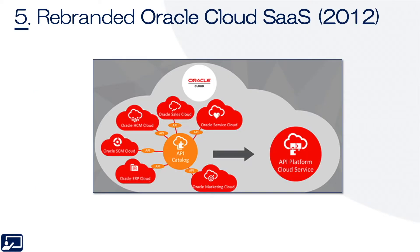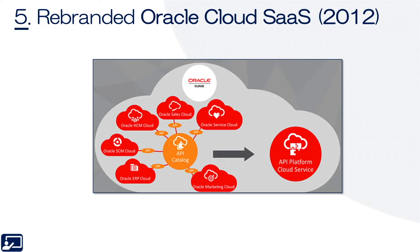Topic number five: rebranded as Oracle Cloud SaaS. As of September 2012, Oracle began to officially change the name of what it then called Fusion to Oracle Cloud Software as a Service.